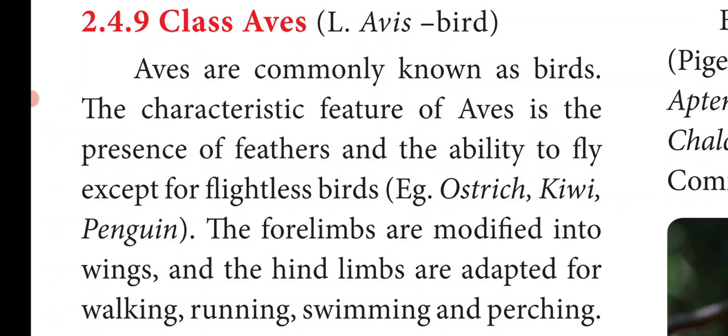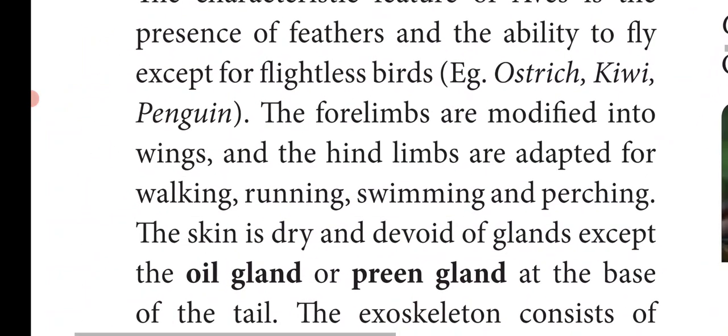The four limbs are modified into wings. In birds, the first pair of limbs — the forelimbs — are modified into wings, and the hind limbs are adapted for walking, running, swimming, and perching.